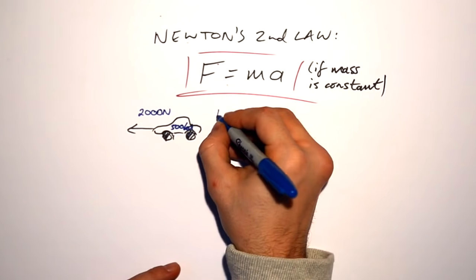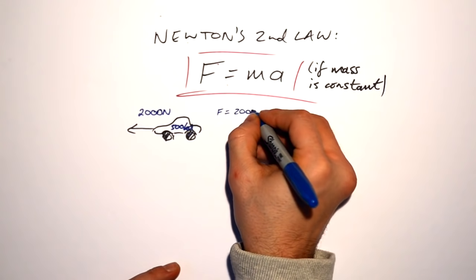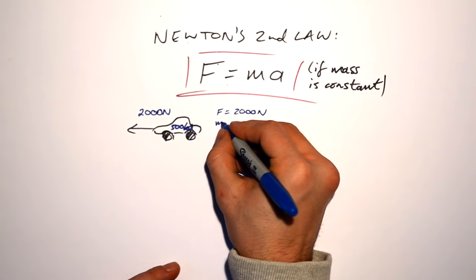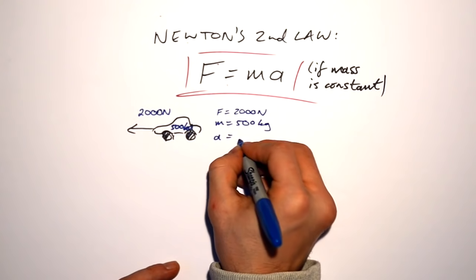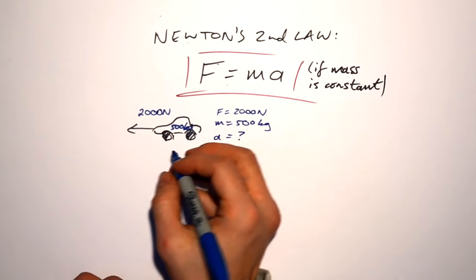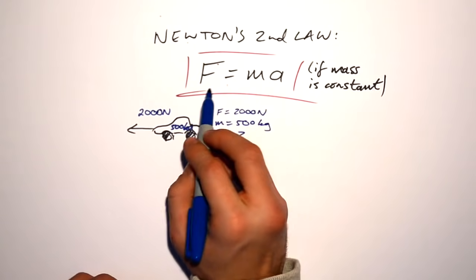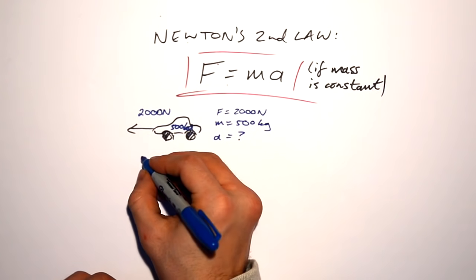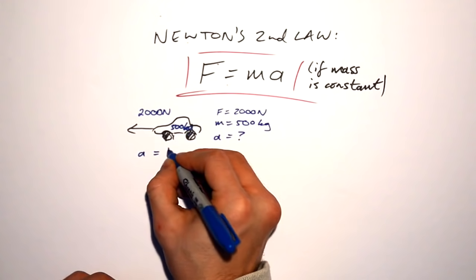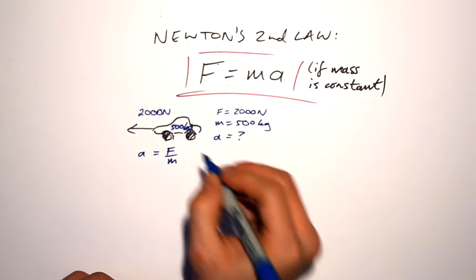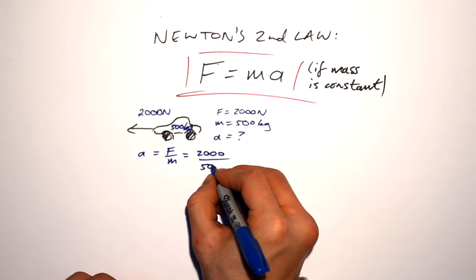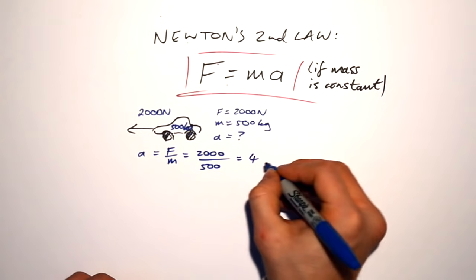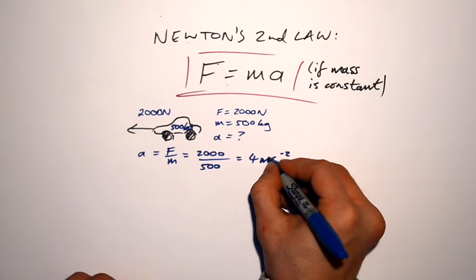So what do we have? We have F equals 2,000 newtons. We have mass is 500 kilograms. We want to find out acceleration. How do we do that? Rearrange it. You should be able to rearrange this without a triangle hopefully. You should end up with acceleration is force divided by mass or force over mass. So that's 2,000 divided by 500 equals 4 meters per second squared.